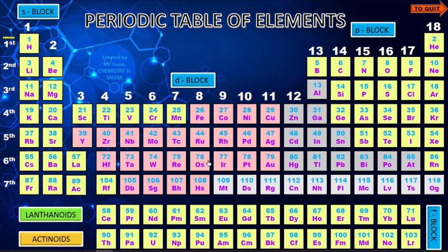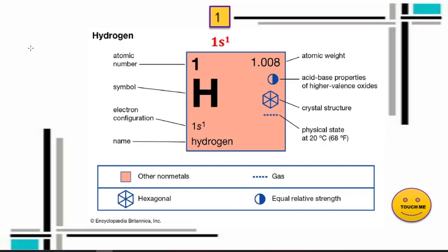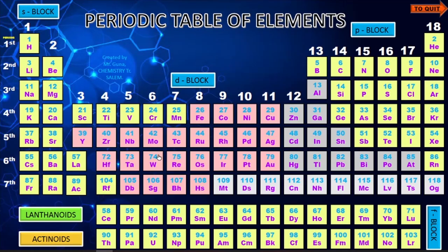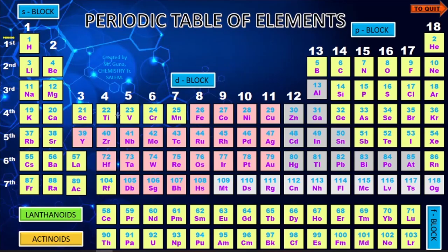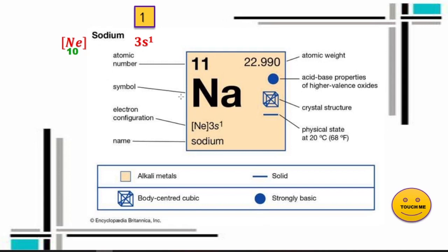You can also explore individual elements. Clicking on hydrogen, for example, takes you to a page with authenticated information — atomic number, symbol, electronic configuration, name, atomic weight, whether it is a gas, and its behavior. All those details are given along with the electronic configuration. Click 'Touch Me' to return to the periodic table and explore helium or any other element.